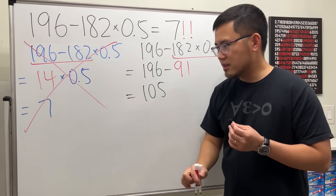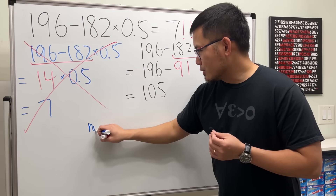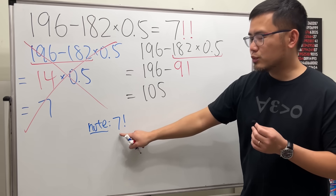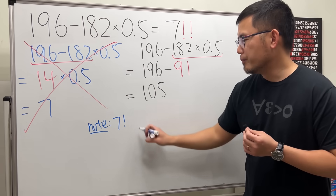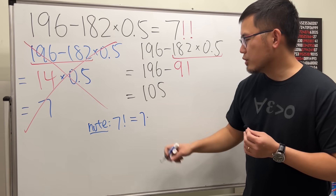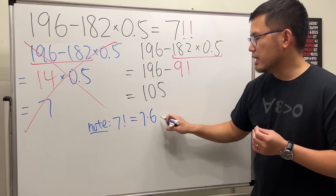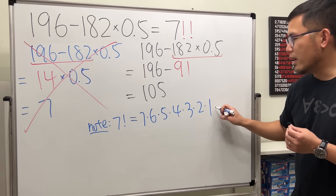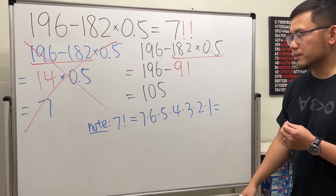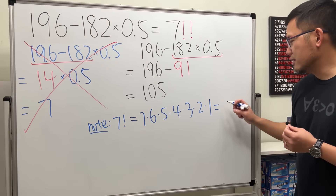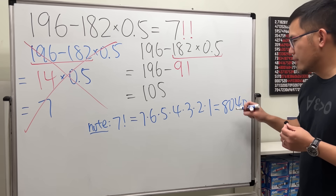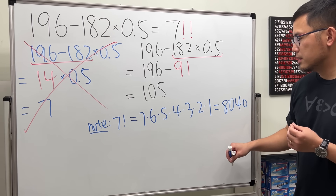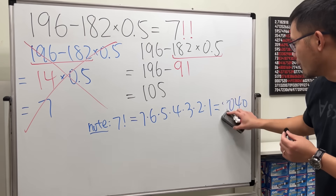If you have just one exclamation mark, that's the regular factorial: you start with 7 and multiply the next number down — 6, then 5, then 4, 3, 2, 1. The answer is 5040.